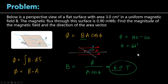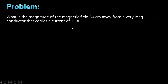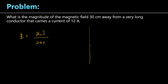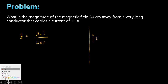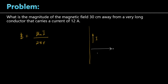Now the last problem for this episode. This time we compute the magnetic field coming from an electric current. What is the magnitude of the magnetic field at a distance of 30 cm from a very long conductor carrying a current of 12 amperes? The formula for the magnetic field around a long straight conductor is B equals mu-not times I divided by 2 pi R.